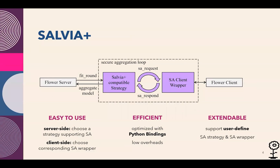Flower supports secure aggregation through a module called SecAgg-Plus. It's quite easy to use. If you want to use one of the secure aggregation protocols, just choose the strategies supporting SecAgg, such as SecAgg+ FedAverage and LightSecAgg FedAverage, on the server side, and on the client side choose a corresponding client wrapper. We have already optimized this module and created Python bindings to allow calling C++ functions in Python. These functions are far more efficient in dealing with the cryptographic operations.